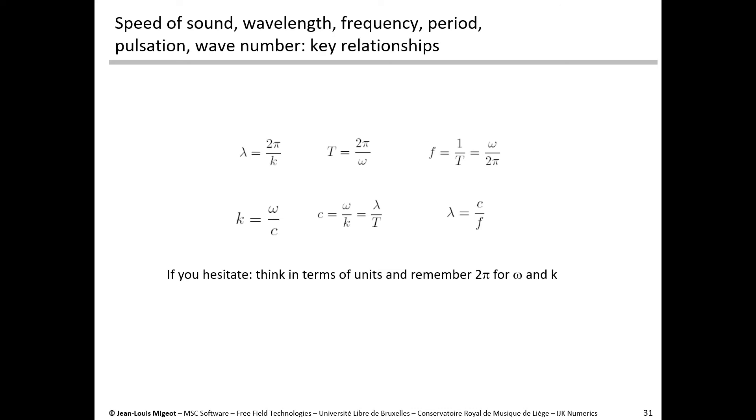If you hesitate in any of these formulas, please think in terms of units. Lambda is a length, and the length is indeed the speed divided by a frequency. Or a frequency is Hertz, so it's a number of cycles per second, so it's one over time, it's one over period. And just remember that omega, the pulsation, and k, the wave number, involve a 2pi factor.